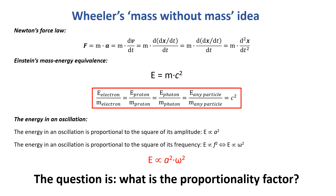That mass-energy equivalence tells me that if we can understand mass in terms of motion, then somehow we should be able to understand energy in terms of motion too. That was John Wheeler's basic instinct when he coined the term mass without mass. There's energy in an oscillation, and energy has an equivalent mass, so we should understand mass in terms of the energy of some oscillation. That oscillation may be electromagnetic or gravitational — some force per unit charge if we're thinking of the electromagnetic force.